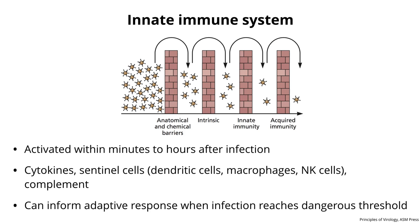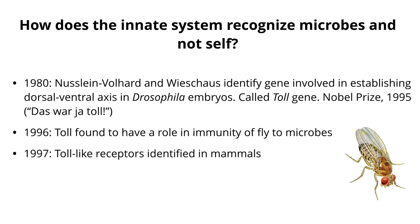Now let's talk about innate immunity. If a virus makes it through intrinsic defenses, it encounters the innate immune system, activated within minutes to hours after infection. It is comprised of cytokines, sentinel cells including dendritic cells, macrophages, and NK cells, and a set of serum proteins called complement. The innate immune system is pretty good at eliminating viruses early on. When it cannot, it collaborates with the adaptive immune system, which then produces antibodies and T-cells.